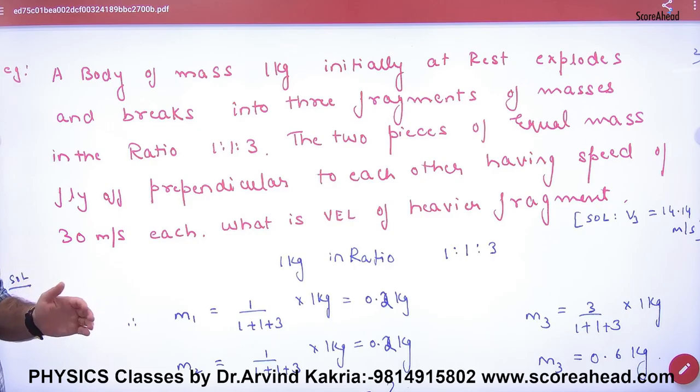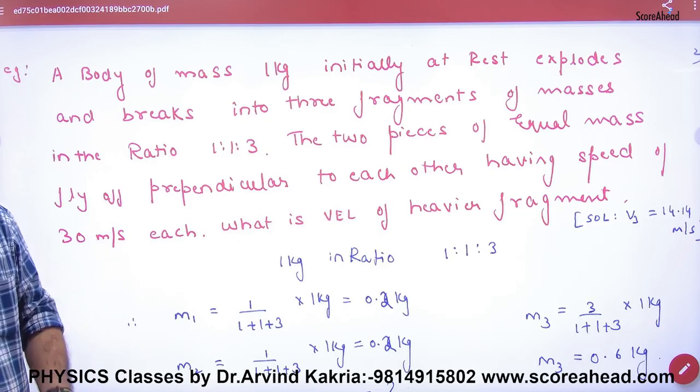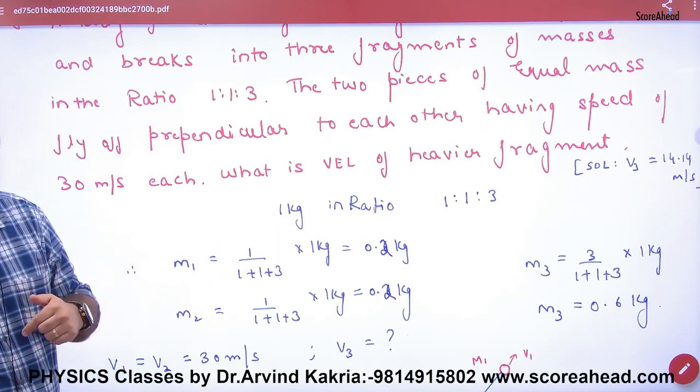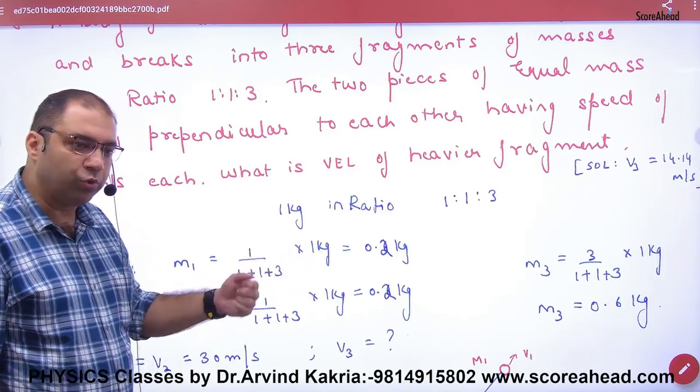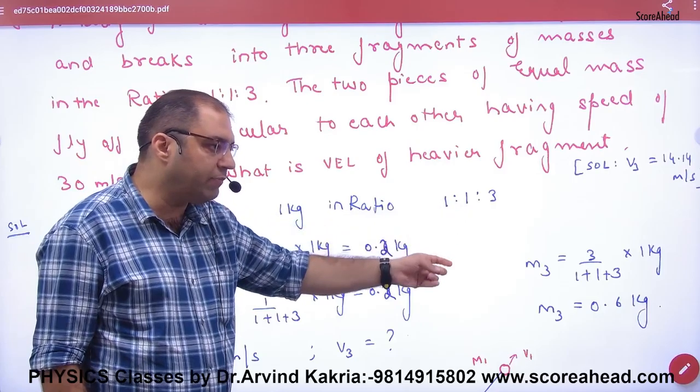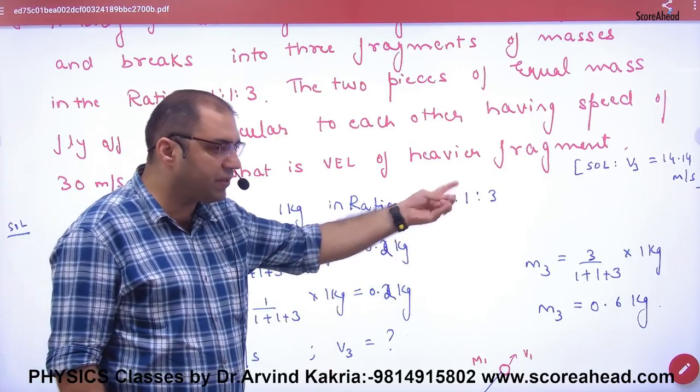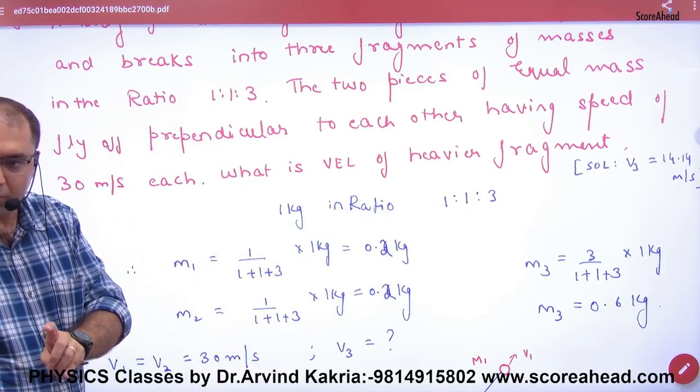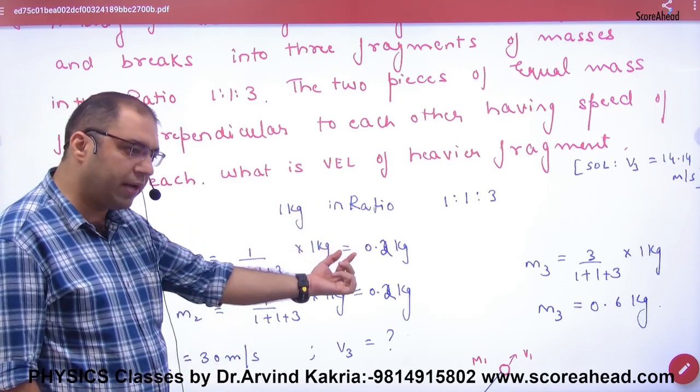Let's do the work. 1 kg mass, how to divide in ratio 1:1:3? The first part is 1 divided by (1+1+3) into 1 kg. The second part is 1/(1+1+3) into 1 kg, and the third part is 3/(1+1+3) into 1 kg.